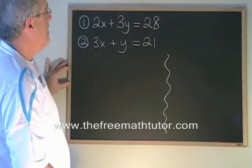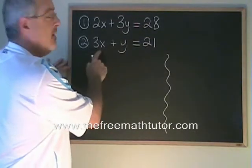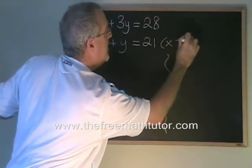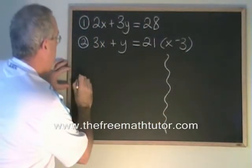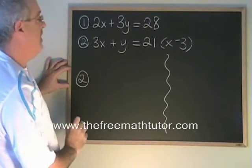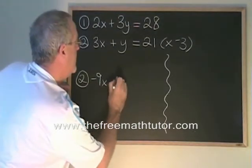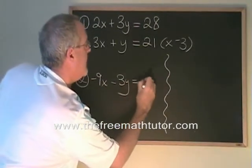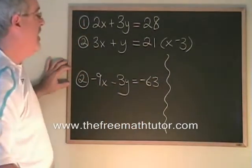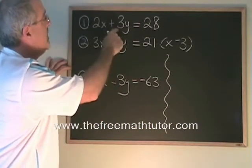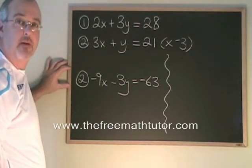In this case, if we multiply this second equation by negative 3, we will get negative 9x minus 3y equals negative 63. Now we have a negative 3y here, which is equal and opposite to this positive 3y in the first equation.